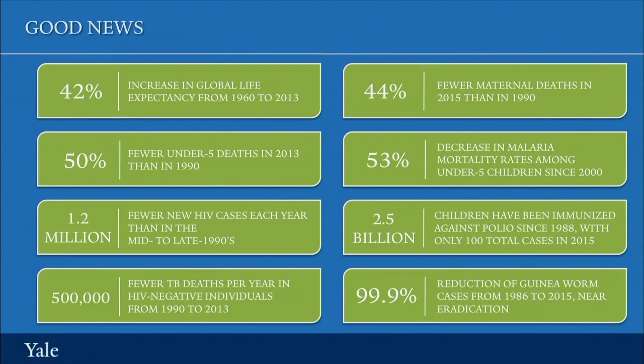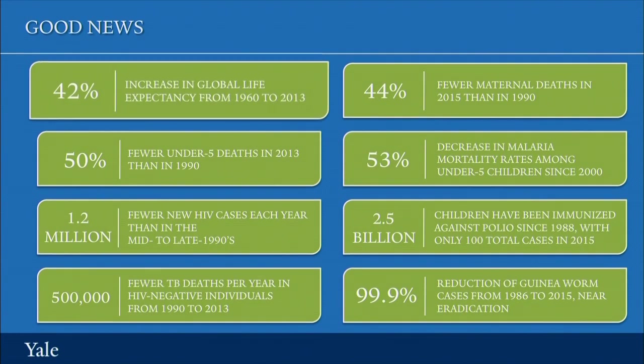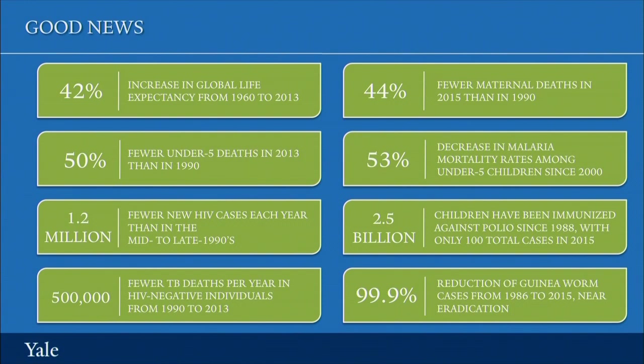Let's begin by talking about some of the good news in global health — some of the important progress that's been made over the last several decades in improving human health globally. First, there's been an increase of 42% in life expectancy globally from 1960 to 2013. Never before have so many people lived for so long.